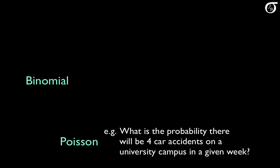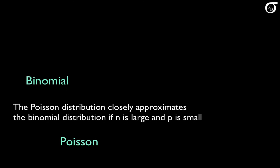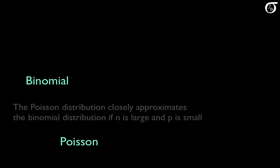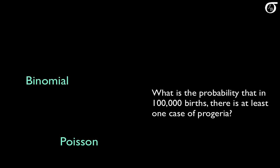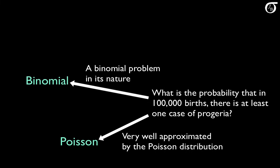There is a relationship between the Poisson distribution and the binomial distribution. The Poisson distribution closely approximates the binomial distribution if n, the number of trials, is large and p, the probability of success, is very small. For example: what is the probability that in a random sample of 100,000 births, there is at least one case of progeria? Progeria is an extremely rare disease that causes premature aging, and it occurs in about 1 in every 8 million births. This is truly a binomial problem, but with a very large n of 100,000 and a very small probability of success, so it could be very well approximated by the Poisson distribution.